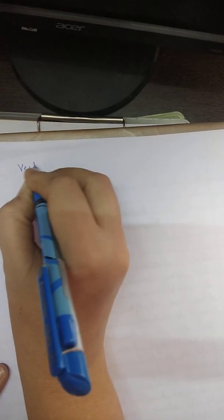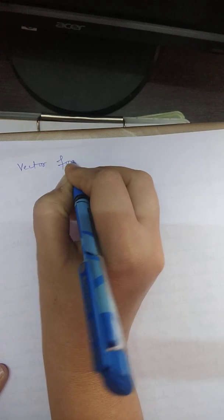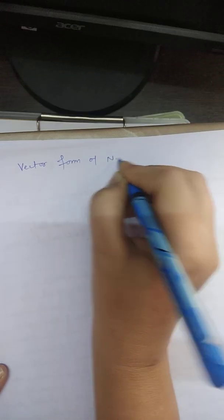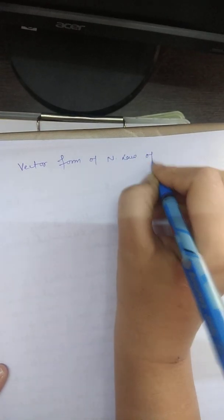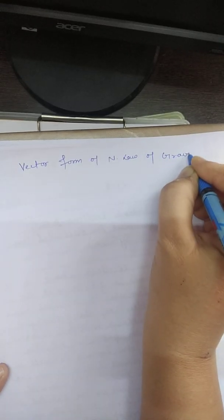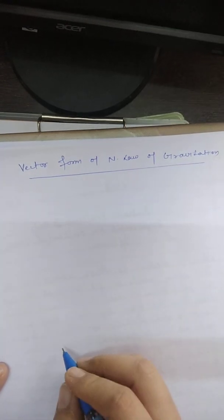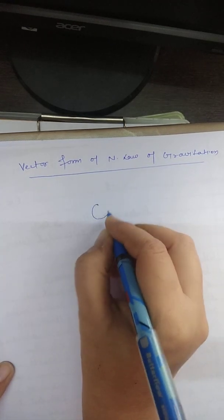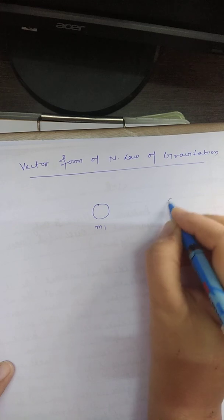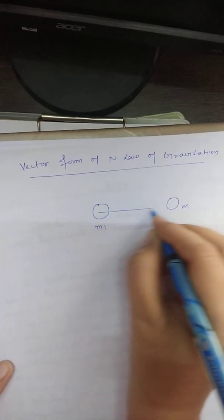Okay student, now I'm going to discuss the vector form of Newton's law of gravitation. To write the vector form, there are two masses M1 and M2.